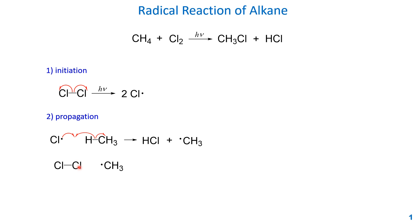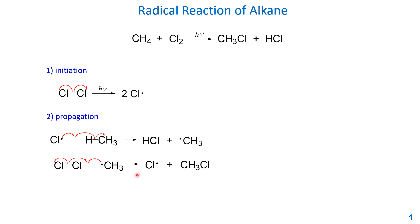One of the chlorine radicals combines with the methyl radical to form the major product, chloromethane. The other chlorine radical remains and goes back to the first propagation step to react with more methane. This is a sustainable cycle — it keeps going until the limiting reactant is fully consumed.